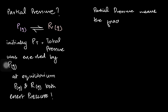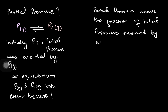At equilibrium, the red colored product is also present, so both the purple and red gases exert their own pressures within the container. Partial pressure means the fraction of the total pressure exerted by each gas. In this container, the total pressure equals the partial pressure of the purple gas plus the partial pressure of the red gas.